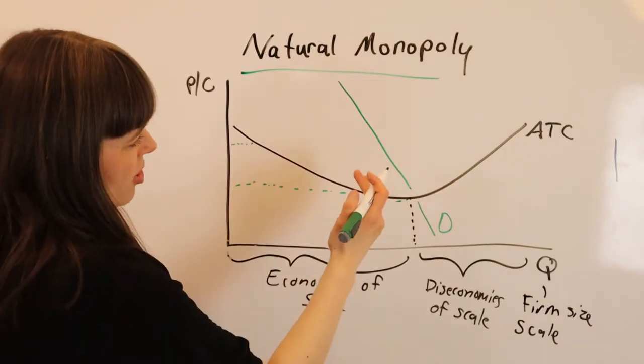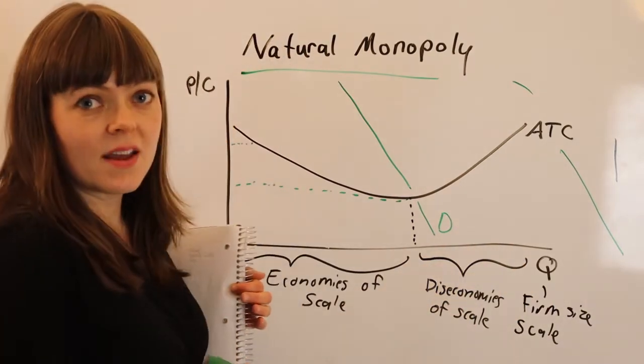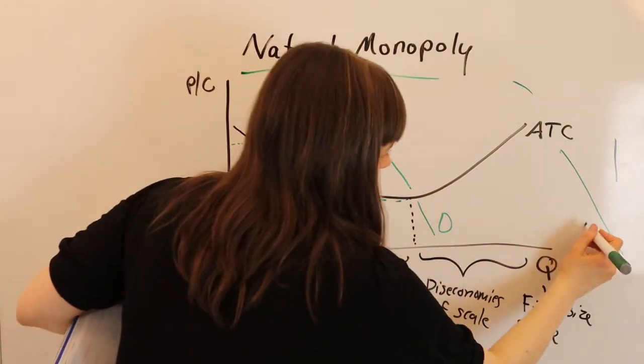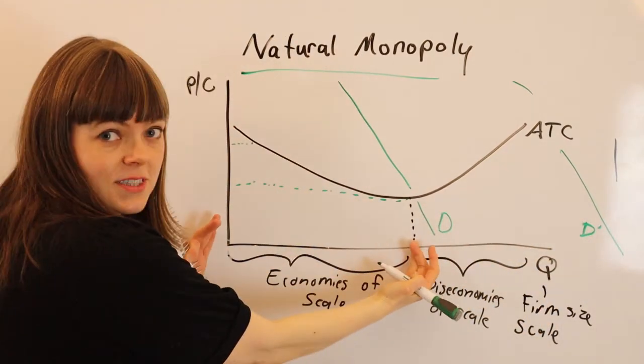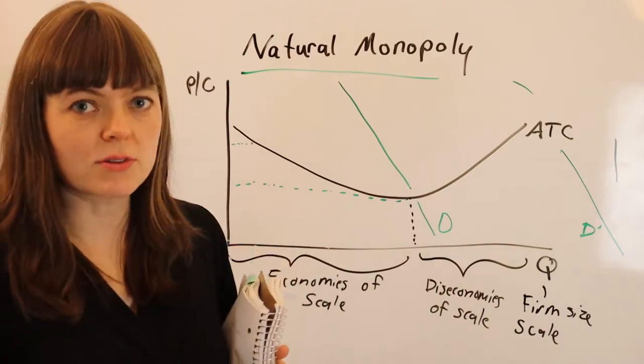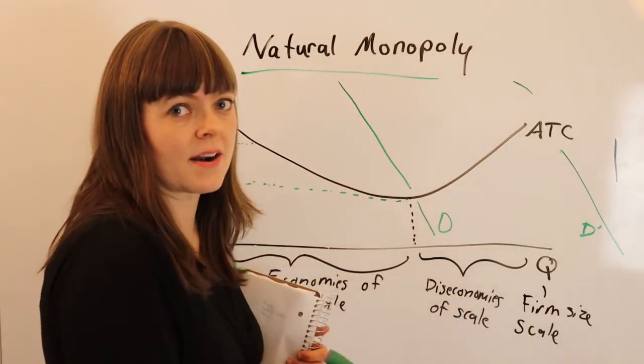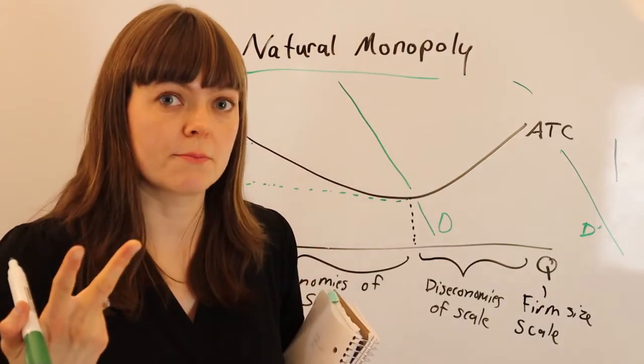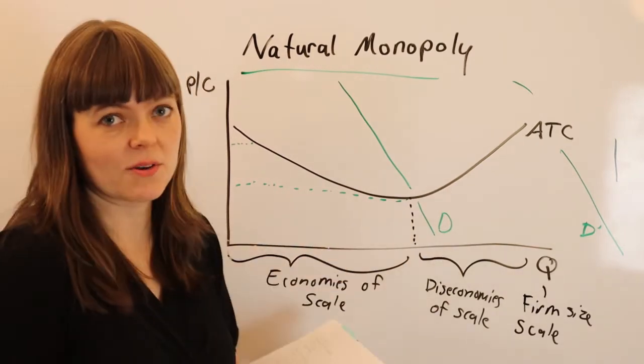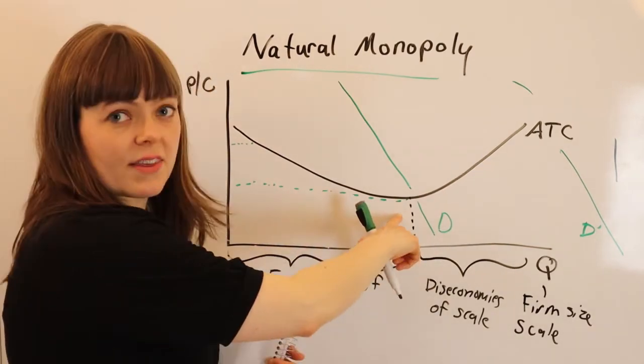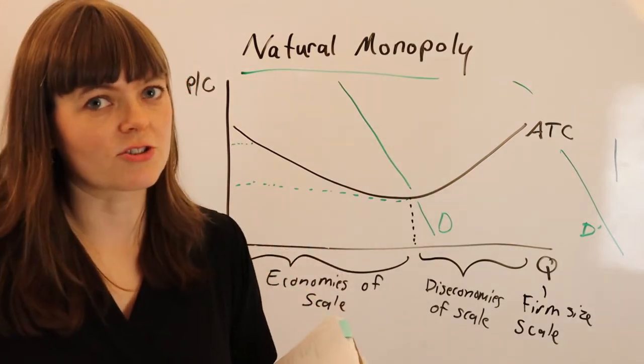Now we might imagine if the demand curve is like way out here, like let's say it's twice that, then this industry can easily have two different firms. This is the second demand. You'd have one firm that's this big and another firm that's about the same size. They both produce really efficiently. So essentially this industry with this kind of demand will naturally have two competing firms. But if the demand for the product is really about equal to the optimal size of the company, then there's a case that this might be a situation where you have a natural monopoly.